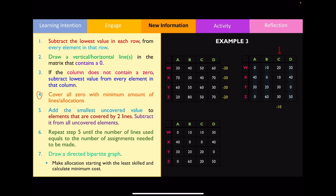Covering all zeros again with the minimum lines gives us the next table. Step five: add the smallest uncovered value — which is ten — to the elements covered by two lines (adding ten to the number 40), and subtract ten from all remaining uncovered elements. Representing this on another table gives us the updated values. Covering all zeros again, the number of lines now matches the number of allocations needed, so we can draw the directed bipartite graph.